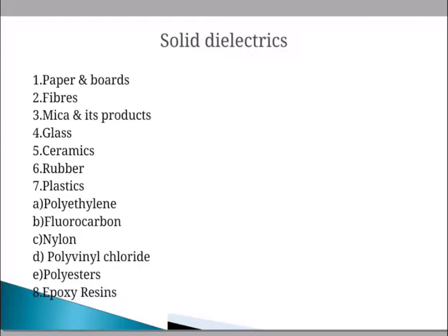Nylon is a thermoplastic possessing high impact and tensile strength over a wide range of temperatures. It also has high dielectric strength, good surface and volume resistivity even after lengthy exposure to high humidity, and is resistant to chemical action. It can be easily molded and machined and is recommended for high-frequency, low-loss applications. In electrical engineering, nylon moldings are used for coil forms, fasteners, connectors, washers, cable clamps, and switch housings.